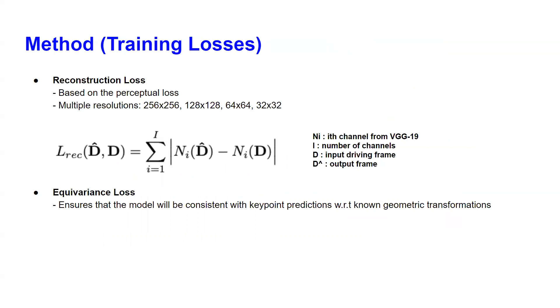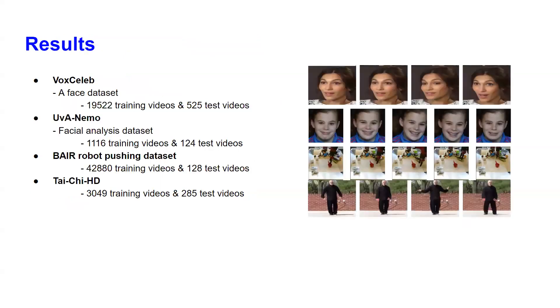During training, they utilized several losses. The first is the reconstruction loss, which is based on the perceptual loss. We discussed it last time during the PI renderer paper and the authors used multiple resolutions. The formula for the reconstruction loss is this one. They also use the equivariance loss, which ensures that the model will be consistent with key point predictions with respect to known geometric transformations.